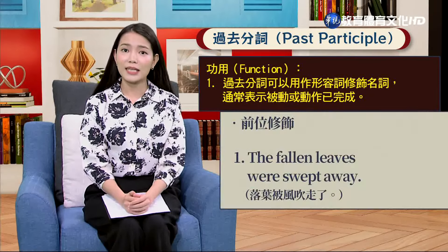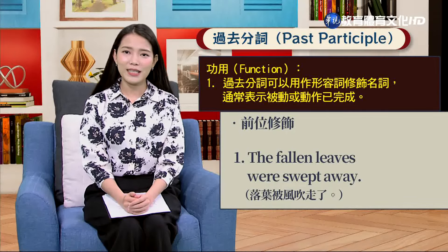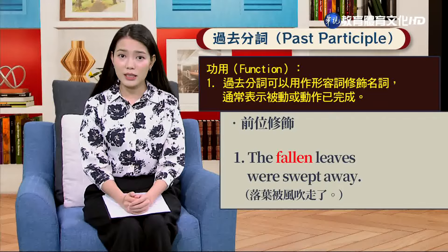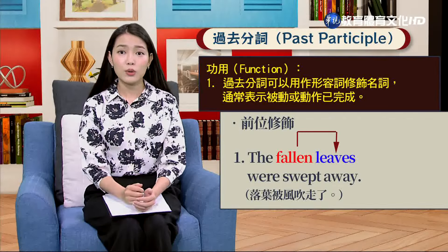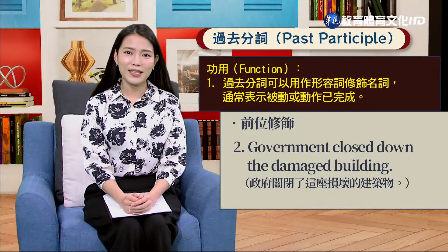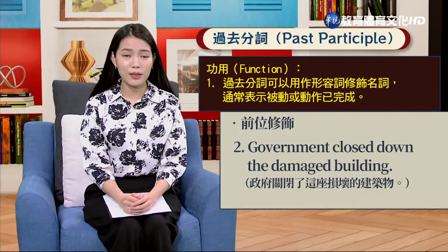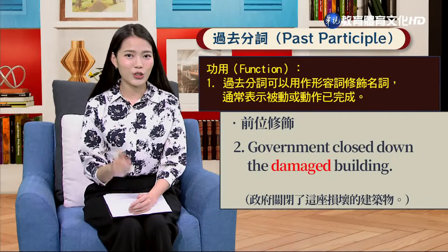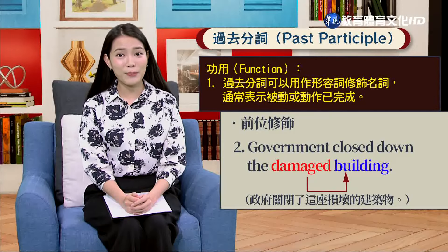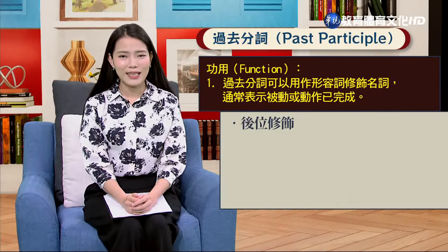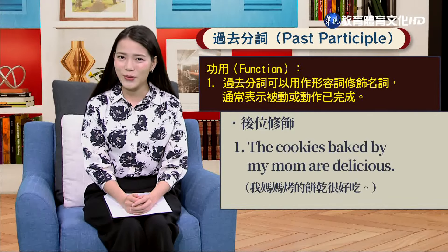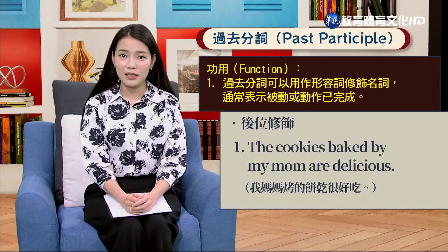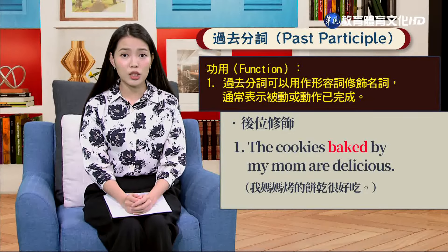過去分詞第一個功能是用作形容詞修飾名詞，表示被動或動作已經完成，同樣分為前位修飾和後位修飾。前位修飾例句：「The fallen leaves were swept away.」落葉被風吹走了，fallen修飾名詞leaves，描述樹葉的狀態。「The government closed down the damaged building.」政府關閉了這座損壞的建築物，damaged修飾名詞building，描述建築物的狀態。